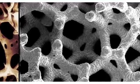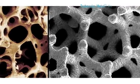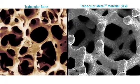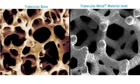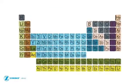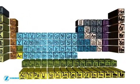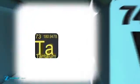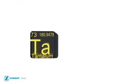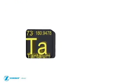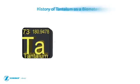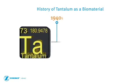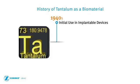Trabecular metal technology is a three-dimensional material, not an implant surface or coating. Its structure is similar to cancellous bone. Trabecular metal material is made of tantalum, element number 73 on the periodic table. Tantalum is a highly biocompatible and corrosion-resistant metal used in various implantable devices for over 60 years, including a dental implant in the 1940s.